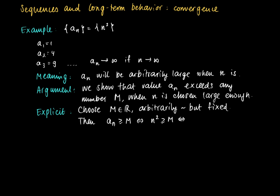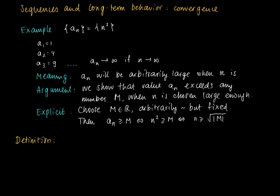We know that this inequality holds if n is greater than or equal to the square root of the absolute value of m. The absolute value is used because m could be negative. This leads us to define what we mean by a_n goes to infinity, or written differently, the limit as n goes to infinity of a_n equals infinity.